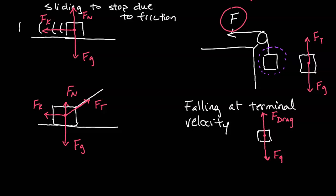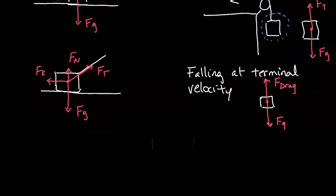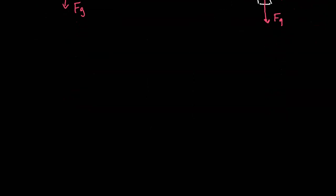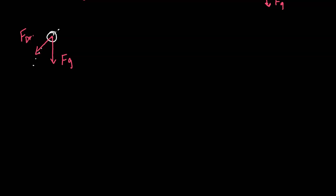Now let's look at a ball thrown into the air. Here I have a ball on its way up. As usual we draw gravity force straight down Fg, and our air drag is going to be opposite the direction the ball is moving — so since the ball is rising up, F_drag will be pointing downward.